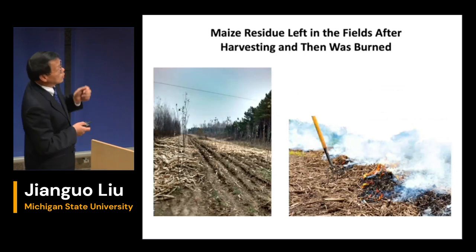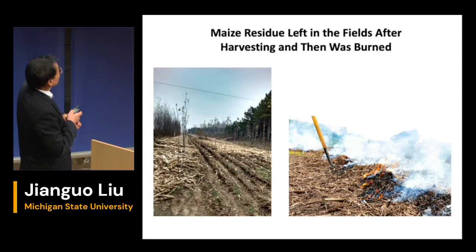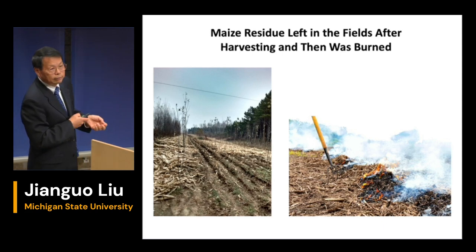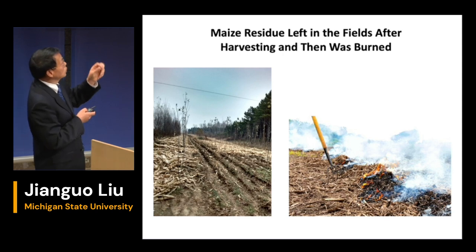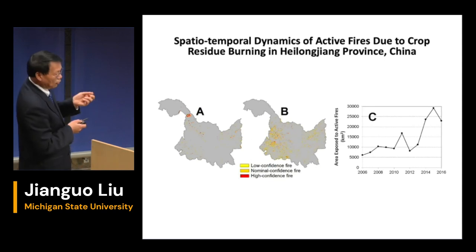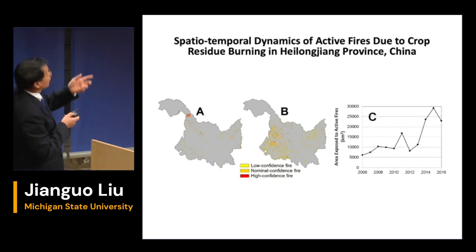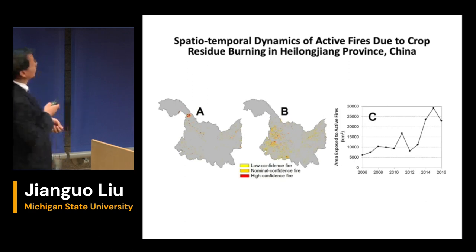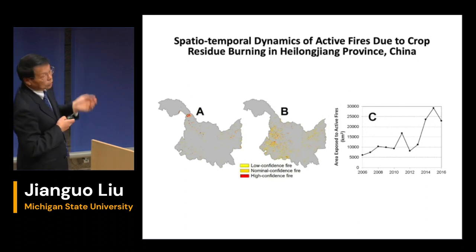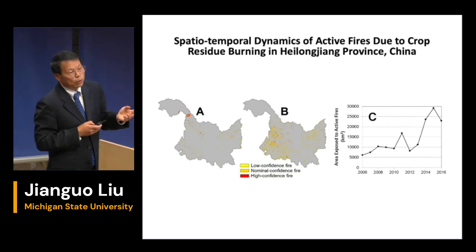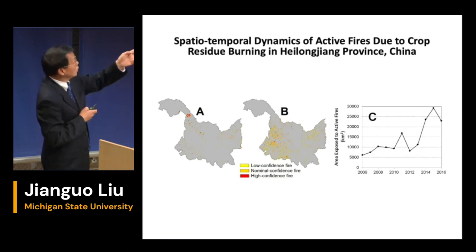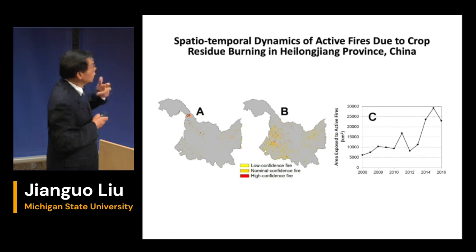This is what we saw in the field — a lot of corn or maize stems and stalks left in the field, followed by burning, which causes air pollution and smoke. This map shows the dynamics of active fire due to crop residue burning in Heilongjiang province, comparing 2006 and 2016. There are many more fires in 2016, corresponding to more soybean imports from Brazil and other countries to China, and more corn or maize in 2016 than 2006.